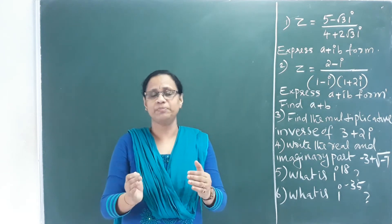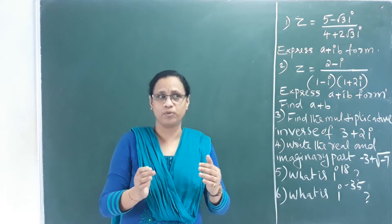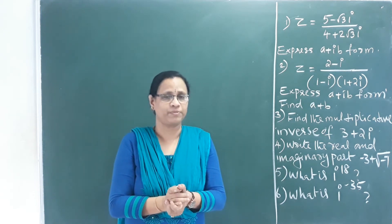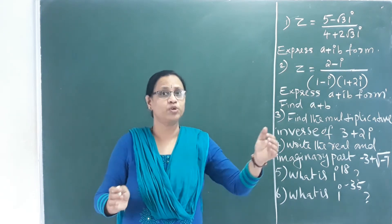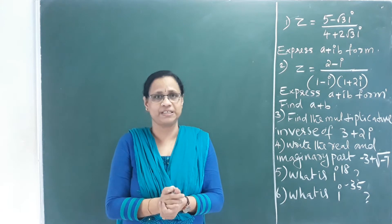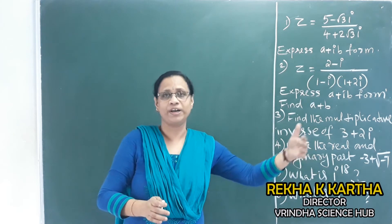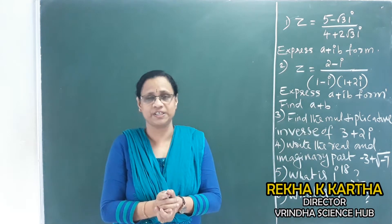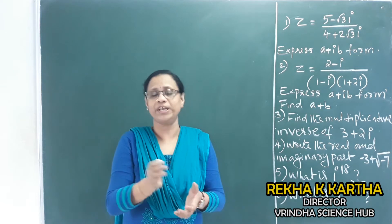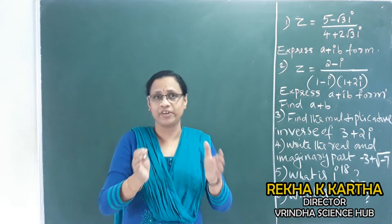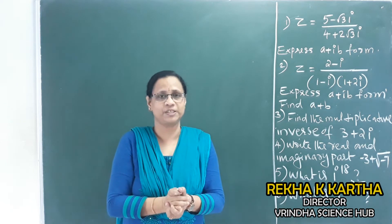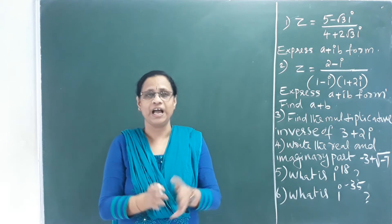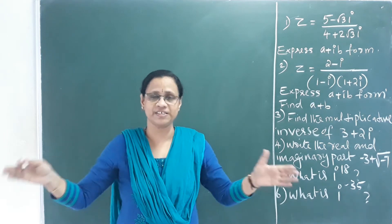While we learn about Complex Numbers, we will first review number systems. Natural Numbers are counting numbers: 1, 2, 3. Negative numbers are also included in all numbers.